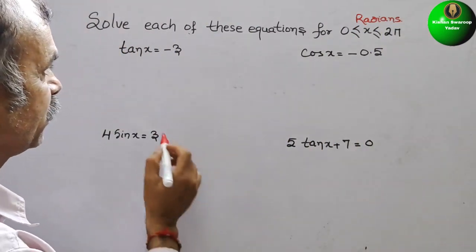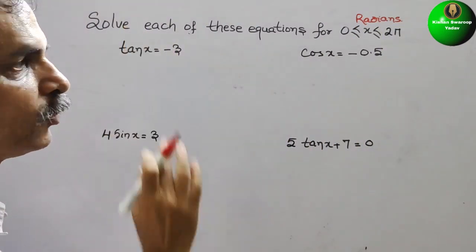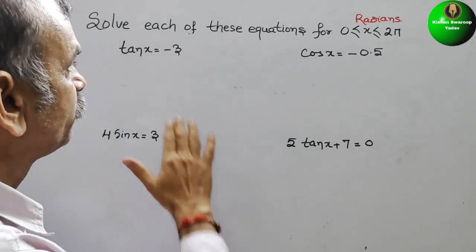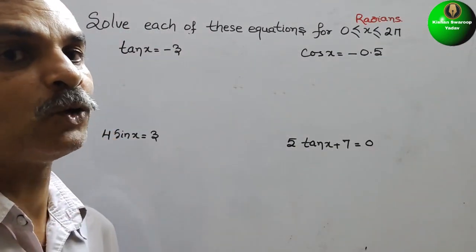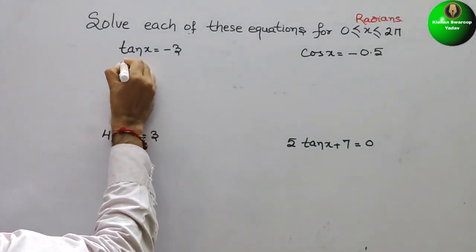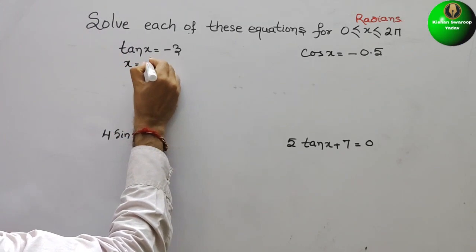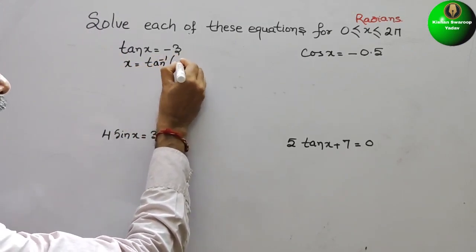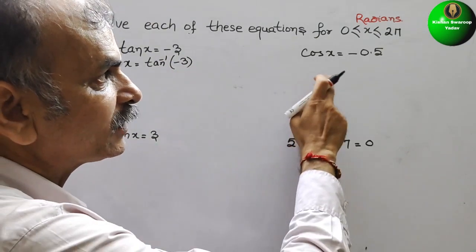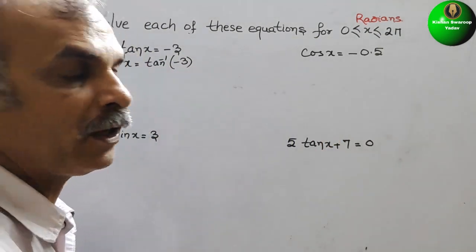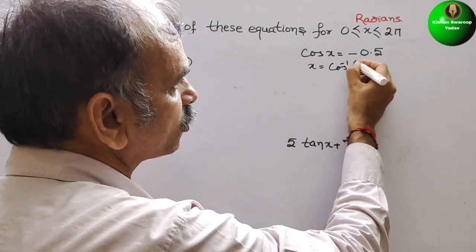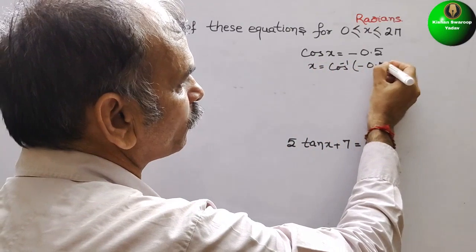First, what we have to do is convert x with respect to x. So here we can say x is equal to tan inverse of minus 3. For the second one, cos x is equal to minus 0.5, so x is equal to cos inverse of minus 0.5.